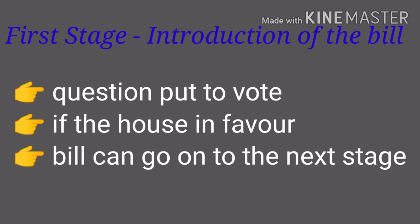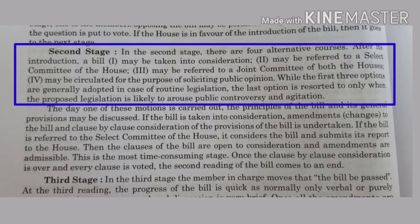In the second stage, there are four alternatives. After a bill is introduced, it may be taken into consideration, referred to a select committee of the House (usually known as the Standing Committee), referred to a joint committee of both Houses, or circulated for gathering public opinion. The first three options are used for routine legislation, while the last is opted for when the proposed law is of a controversial nature.